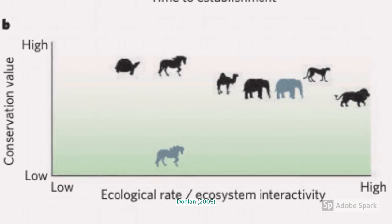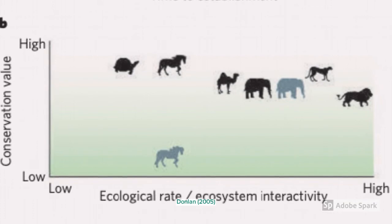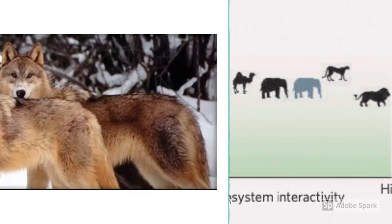Prey populations in areas without a natural predator may go through large boom and bust cycles, building on times of abundance, leading the population to crash when an area is grazed out or productivity changes, reducing food availability and plant biodiversity. The Oostvaardersplassen is a good example of this.